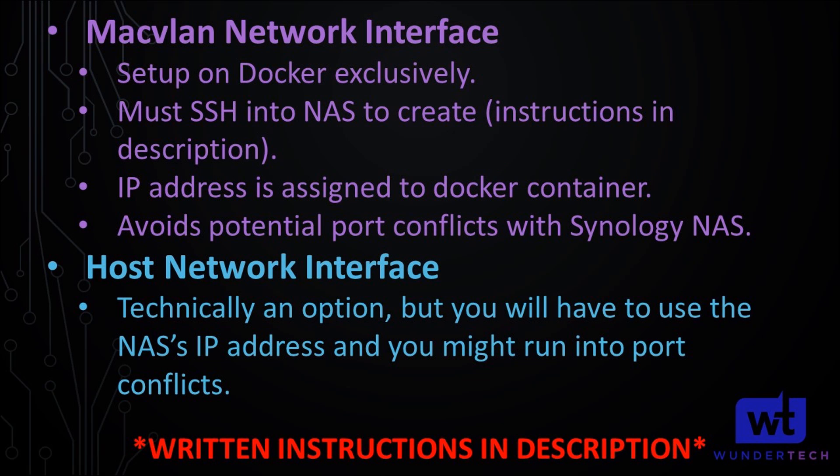Now that Docker is installed and we've created our folders, we're going to look at the network interfaces. This tutorial will have us create a Mac VLAN network interface, which allows the Docker container to have its own IP address. If you don't do it this way, you'd have to use your NAS's IP address. You don't technically have to do this — you can use the host network interface in the Docker configuration instead. But creating a Mac VLAN stops port conflicts and ensures the DNS server IP is always different from your NAS's IP.